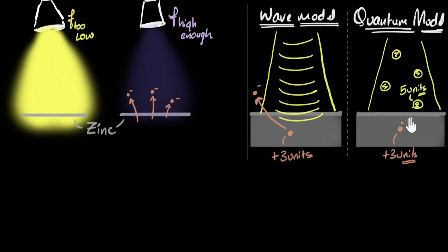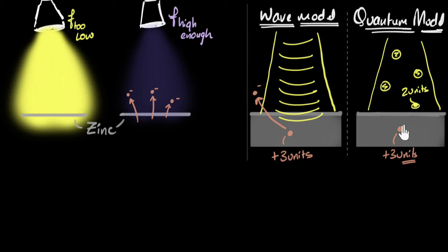But what if the incident photon has only two units of energy instead of five? The electron would absorb that energy, but it's not enough to escape, so it stays trapped inside the metal. The electron gets excited but almost instantly de-excites, releasing that energy as heat or through collisions. Since electrons absorb one photon at a time — the chance of absorbing two simultaneously is negligible — even shining millions of such photons will not cause any photoelectric effect.